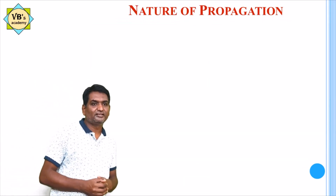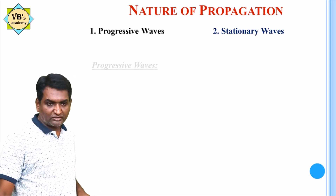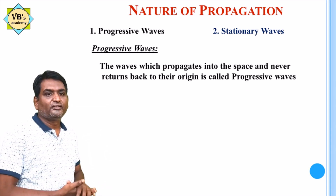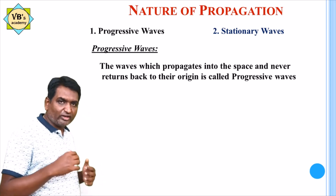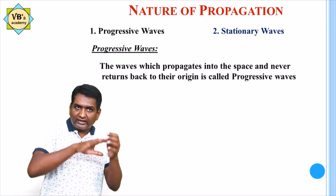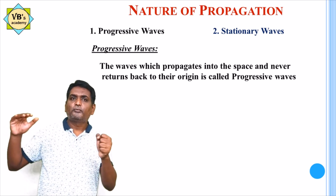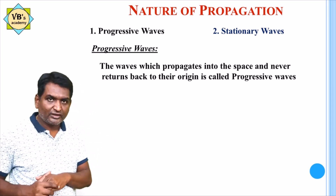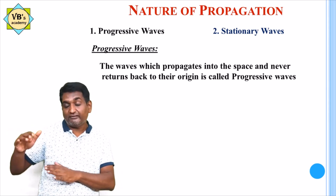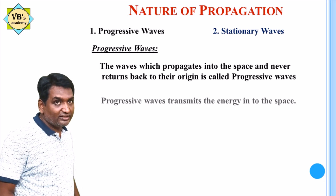Based on the nature of propagation, waves are classified into progressive waves and stationary waves. A progressive wave propagates into space and never returns back to its origin. The wave is generated at a source and transmits energy into space in the forward direction. As the distance increases, the intensity of the wave gradually decreases, and after traveling a certain distance, its intensity becomes zero — the wave vanishes but never returns to its origin. Such waves are called progressive waves.